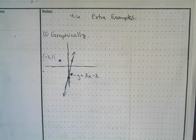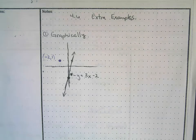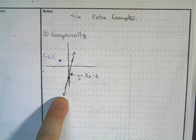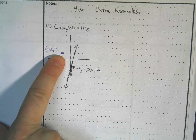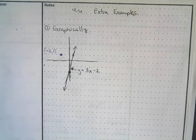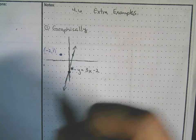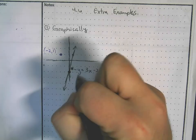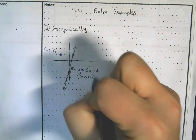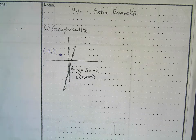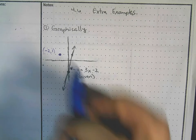We want to find the equation of a line that is parallel to the black line and passes through the purple point. The first thing we want to do is identify the slope of our given line — the line that's given to us. We can either look at the equation or we can count the rise and run.